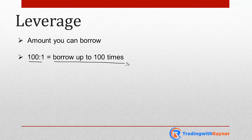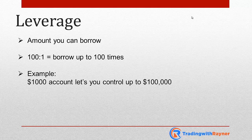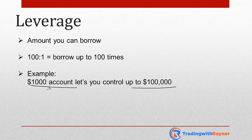Say for example you fund your account with a thousand dollars and your broker allows you a hundred to one leverage. That means your one thousand dollar account lets you control up to a hundred thousand dollars worth of currencies. You have a thousand dollars and you leverage it all the way up to a hundred thousand dollars because you can borrow up to a hundred times.